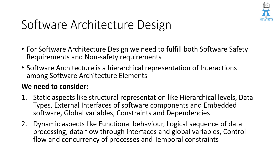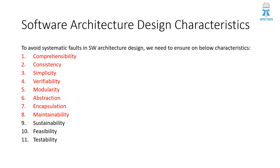Eight essential characteristics must be considered for software architecture design to avoid systematic faults — the only type of fault that occurs in software. The first characteristic is comprehensibility, which is about the completeness of the software architecture design. The second is consistency, meaning it should be accurate, free of conflicts, and in accordance with software safety requirements. The third is simplicity — the design should be simple and modest.